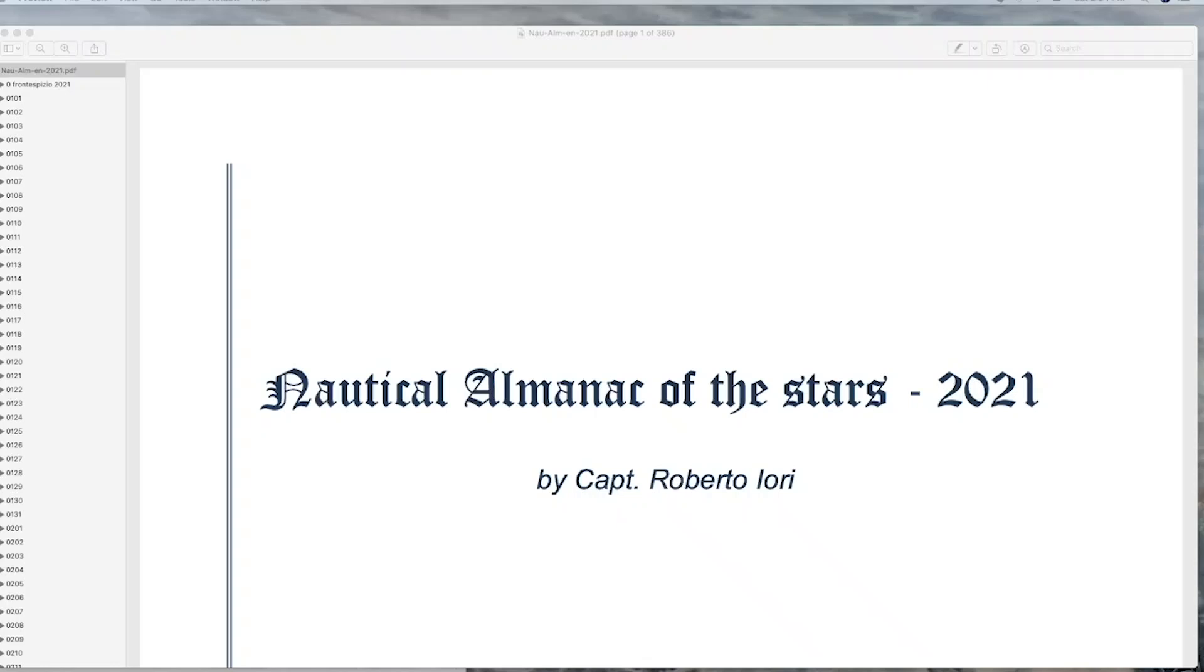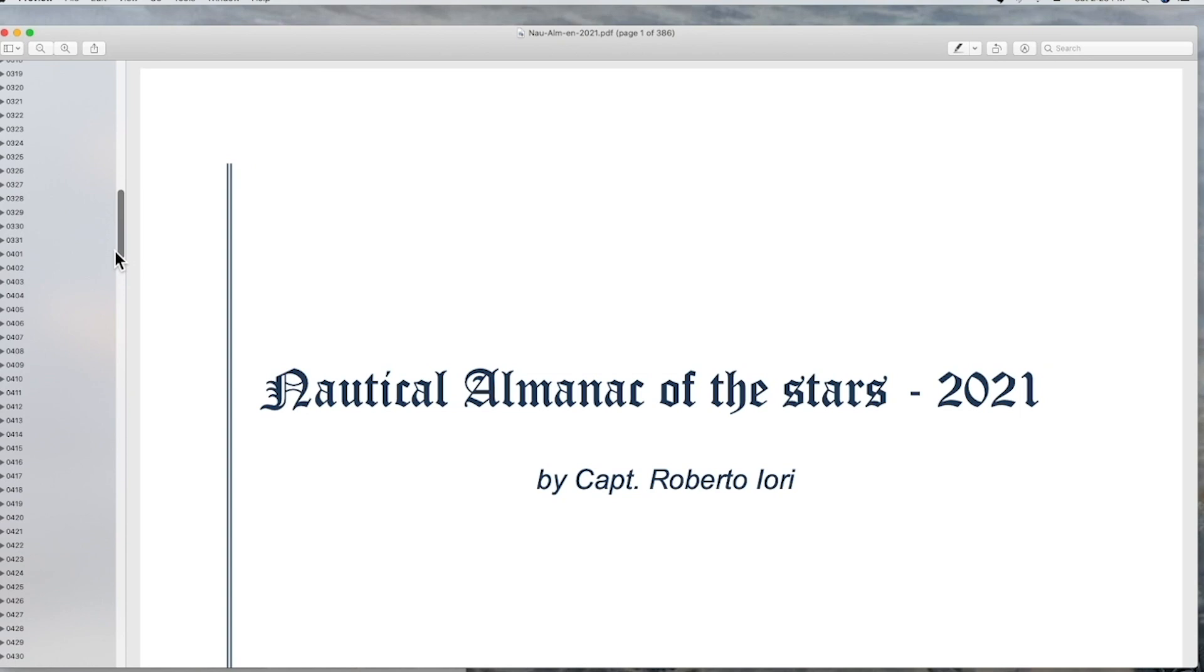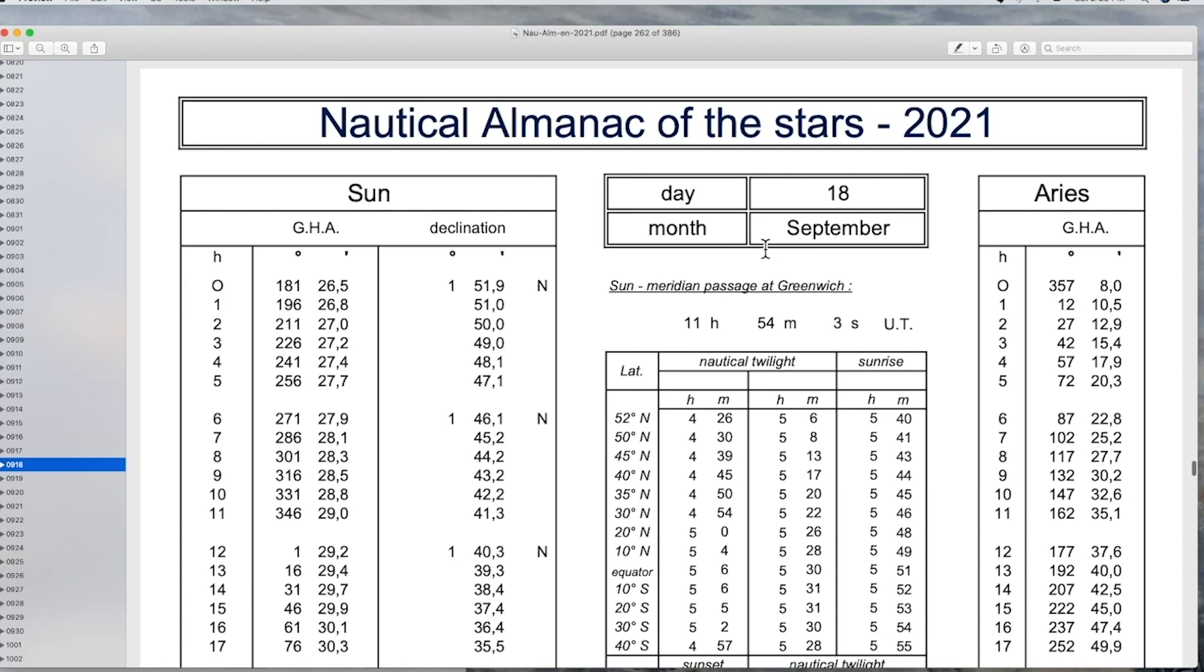Now once we have our readings, we have to go to the Naval Almanac. And here is the Naval Almanac that I'm using for today's readings. On the left side, you'll see a series of numbers. These are dates. For example, that is January 24th. Now today is September 18th. So we're going to come down to September 18th. And here we are, September 18th, 2021.